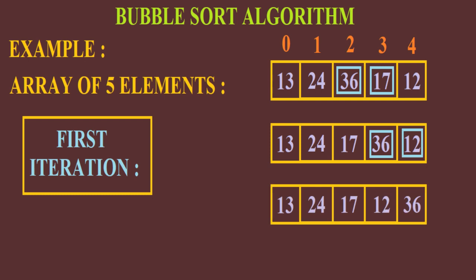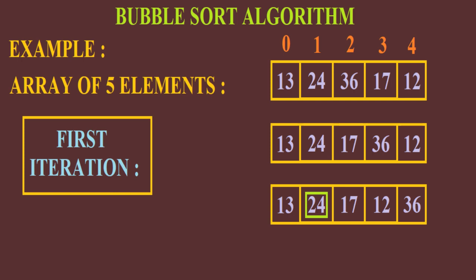Thus after the first iteration, 36 has reached its desired position and the array will look like this: 13, 24, 17, 12 and 36.